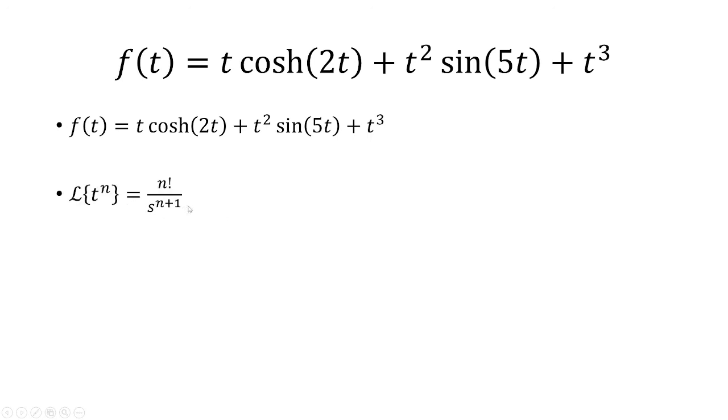In order to do this, first recall that the Laplace transform of t to the n equals n factorial over s to the n plus 1. We'll take the Laplace transform of t cubed, where n is 3, so that's 3 factorial over s to the 4th power. Simplifying, we get 6 over s to the 4th.